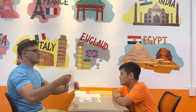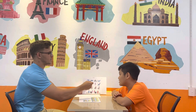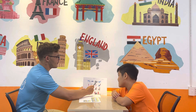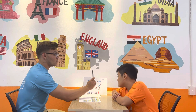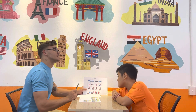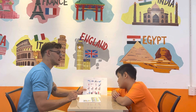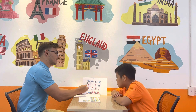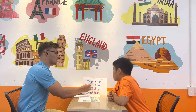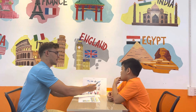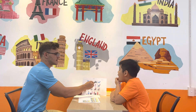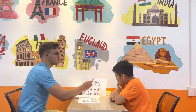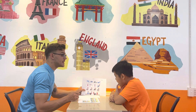Now, part number three. Here we have four rows. In every row, there's one picture that is different. For example, number one: dolphin, shark, panda, whale. The panda is different because the other animals live in the sea.